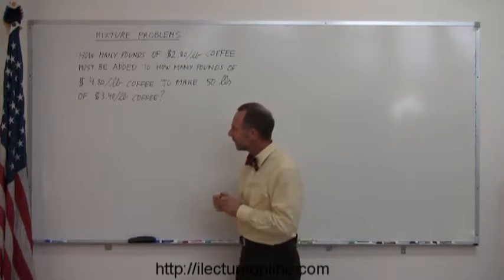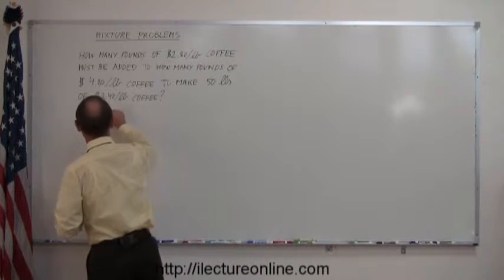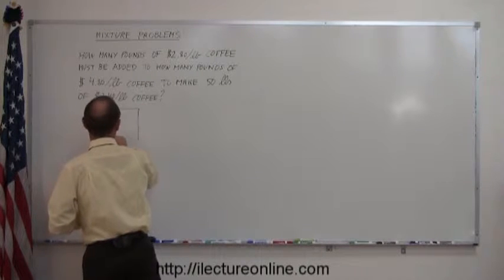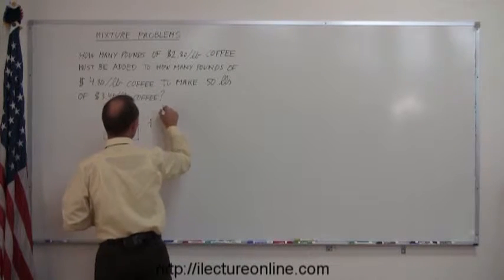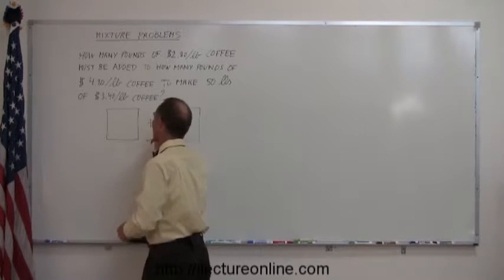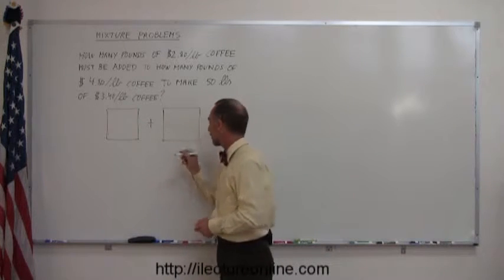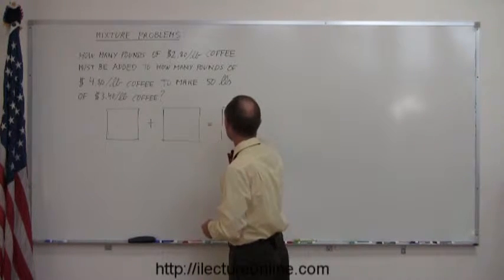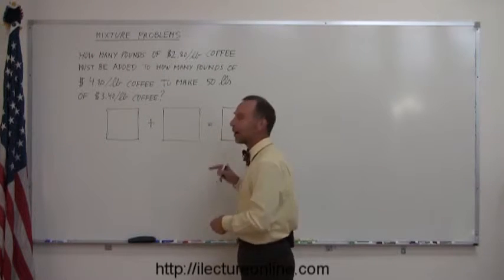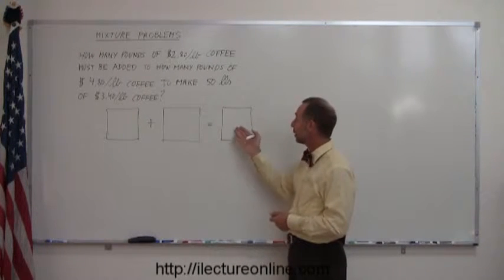How do you do that? Well, again, I think the best way to go about it is to draw a graphical picture of what we're doing. These boxes represent the two different kinds of coffee we're going to mix, and that adds up to this box, and this box represents the kind of coffee you're going to end up with.